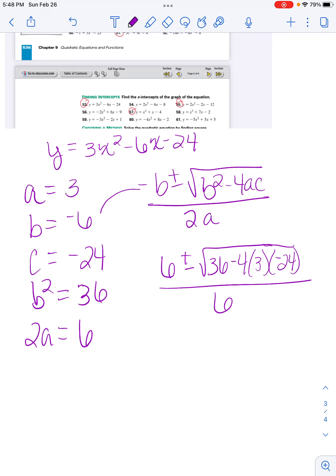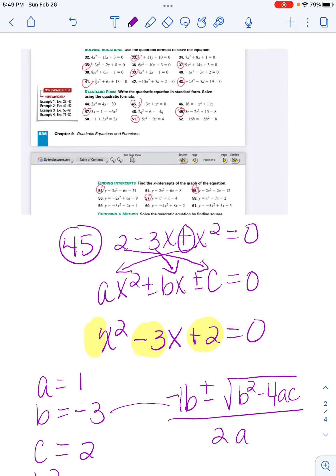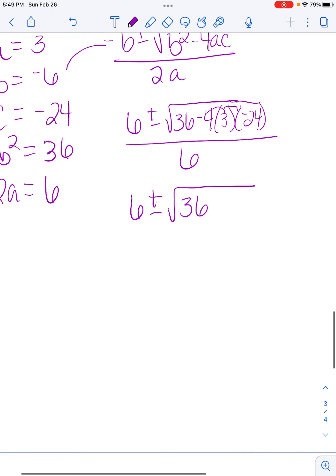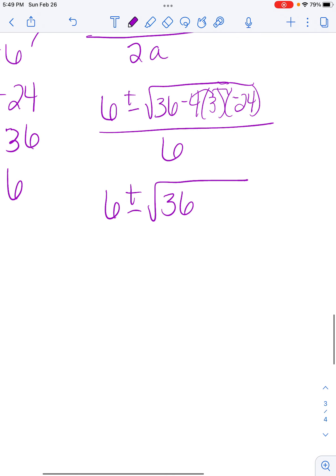And I get 6 plus or minus 36, negative 4 times 3 is negative 12. Negative 12 times negative 24 is positive 288 over 6.